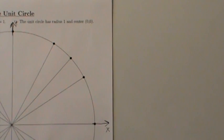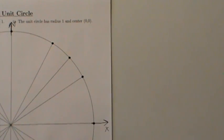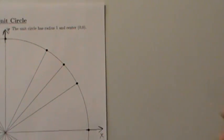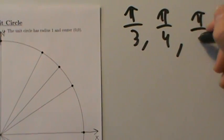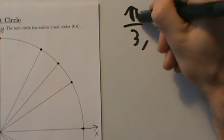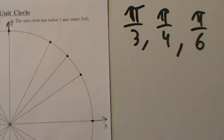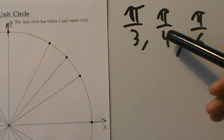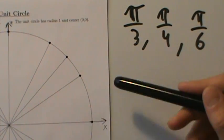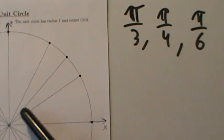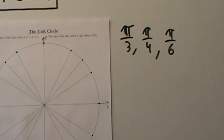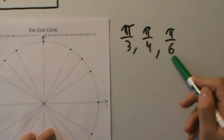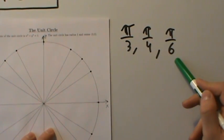We're going to start with the first quadrant. The special angles here are pi over 3, pi over 4, and pi over 6. But what if you're not sure which one goes where? A trick for remembering: 6 is the largest denominator, so dividing by a larger denominator gives a smaller value. The smallest angle here should have the largest denominator, which is 6. The next smallest denominator is 4, and then 3.